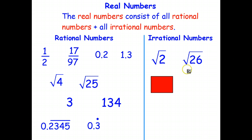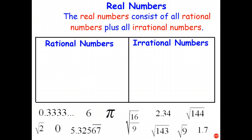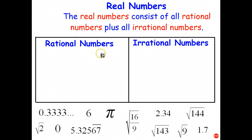Irrational numbers are square roots of numbers that aren't perfect squares, such as the square root of 2 and the square root of 26. And pi is an example of an irrational number. So what I'd like you to do now is stop the video and, on a piece of paper in your exercise book, from this list of numbers at the bottom of the page, write down all of the rational numbers and list all of the irrational numbers. Okay, stop the video and have a go please.